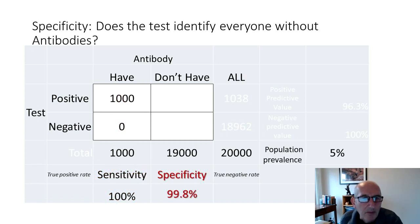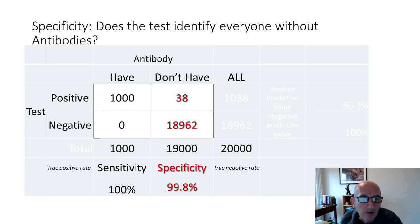The figure for specificity relates to people who don't have the antibody. A specificity of 99.8% says that 99.8% of the time, people who don't have the antibody will test negative. So in this case, out of a population of 19,000 people who don't have antibodies, 38 would test positive and 18,962 would test negative.